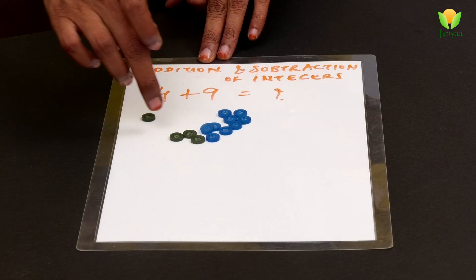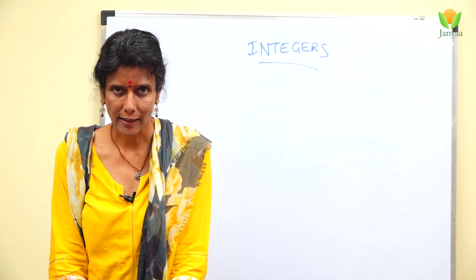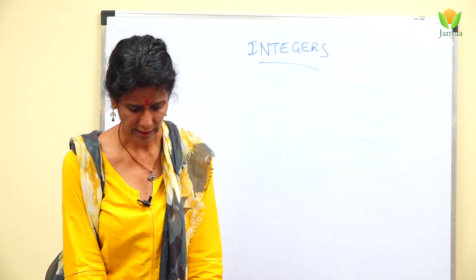10, 11, 12, and 13. So 4 plus 9 equals 13. And we can do this in different ways.